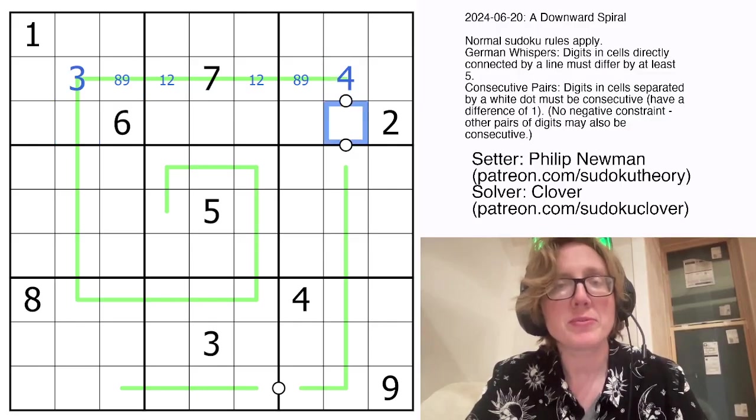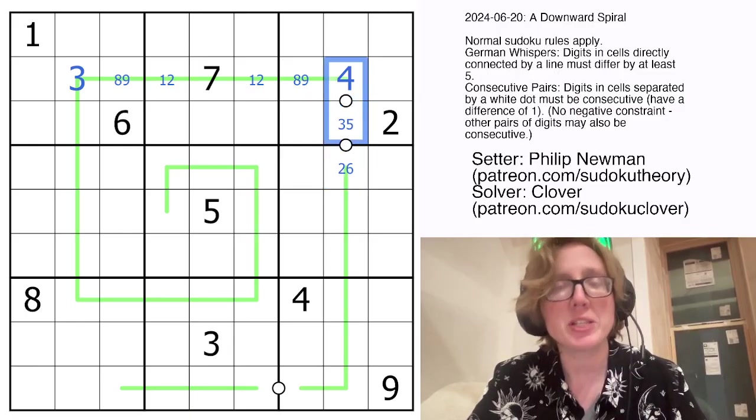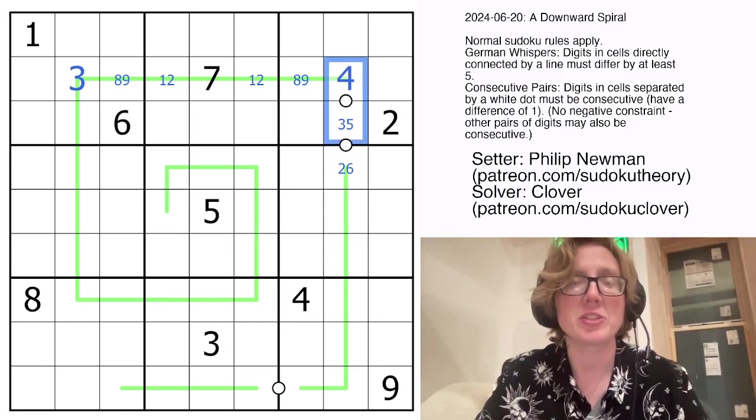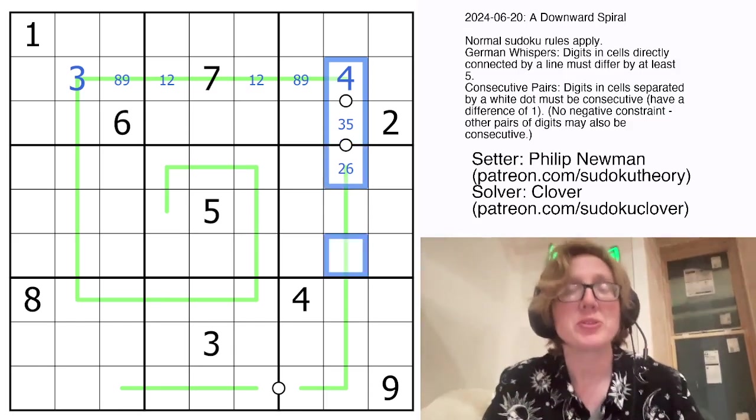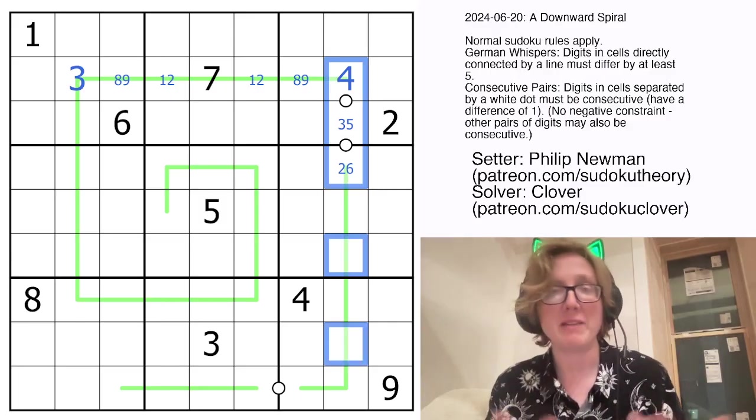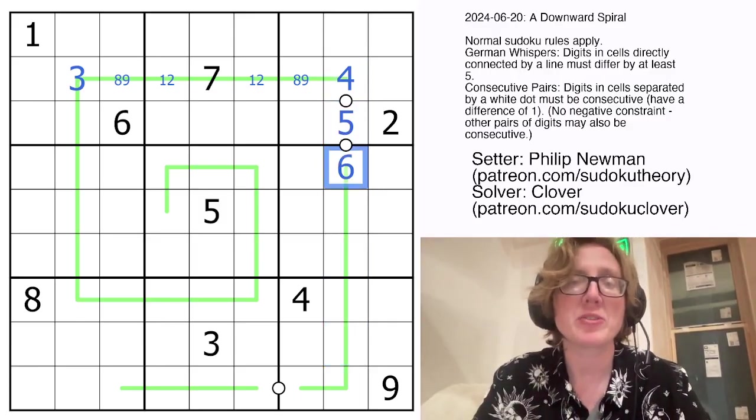Well, if this were to go 4, 3, 2, this would be a low digit, this would also be a low digit, and this would be a low digit. And then, in addition to that, we'd be alternating along this German Whispers line, low, high, low, high, low, high. So, these would also have to be low digits, which is a problem because at that point, we'd have 5 low digits in the same column. So, that's not the situation that we're in, that goes 4, 5, 6.